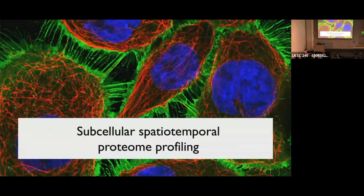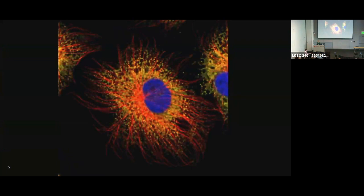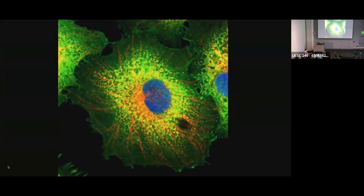We want to see where proteins are inside of the cell because it gives us clues about a protein's function — if it's in the mitochondria it might be involved in energy production, and so on. We built a pipeline using oil-immersion confocal microscopy to localize proteins with reference markers: DAPI for the nucleus, a marker for microtubules, a marker for the endoplasmic reticulum. On top of this we localize human proteins one at a time — for example CD44, which we can see is on the surface of the cell.